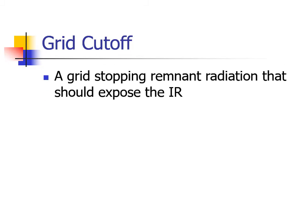Before we begin, let's talk about the problem of grid cutoff. Grid cutoff is defined as a loss of radiation intensity caused by the grid absorbing remnant radiation that should reach the image receptor.